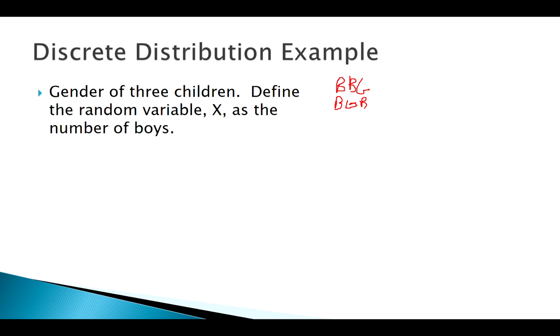We can say okay well two possibilities, boy or girl, three kids, that means there are eight total possibilities. But we notice out of all of these outcomes.